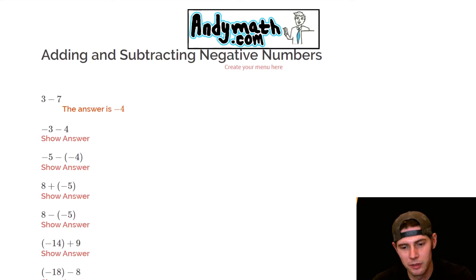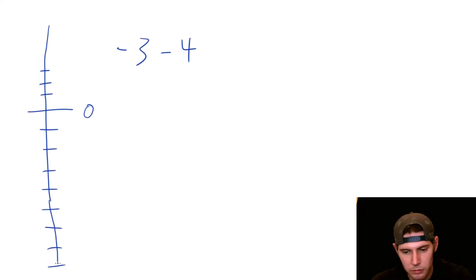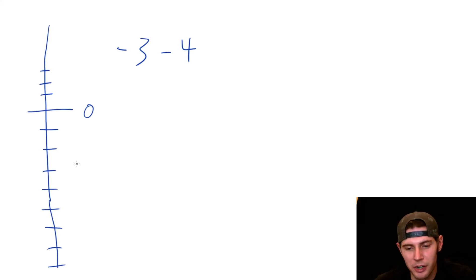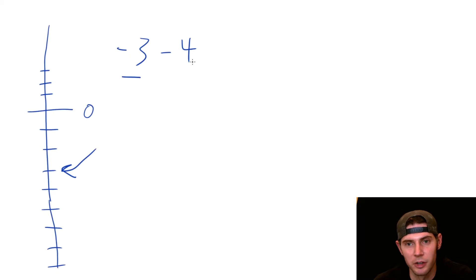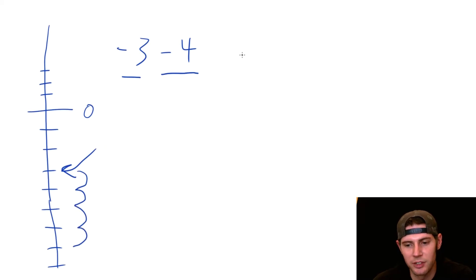Same idea — this one is negative three minus four. We start at negative three, and then minus four means go down four: one, two, three, four. And now we're at negative seven.